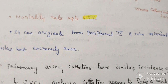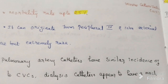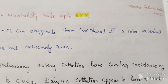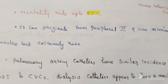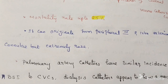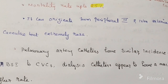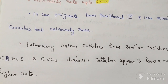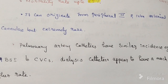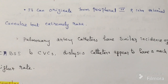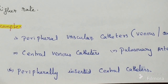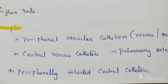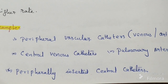Catheter-associated bloodstream infection can originate from peripheral intravenous and intra-arterial cannulae, but this is extremely rare. Pulmonary artery catheters have a similar incidence to CVC. Dialysis catheters appear to have a much higher rate.